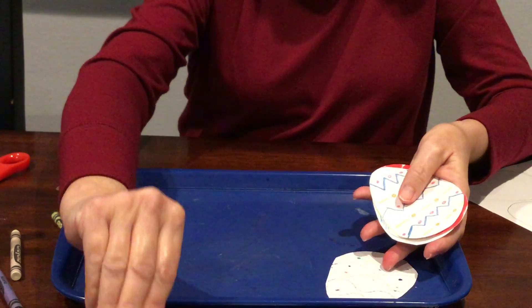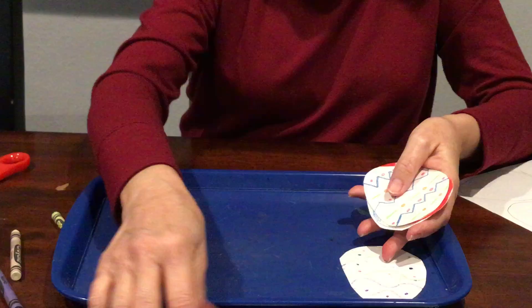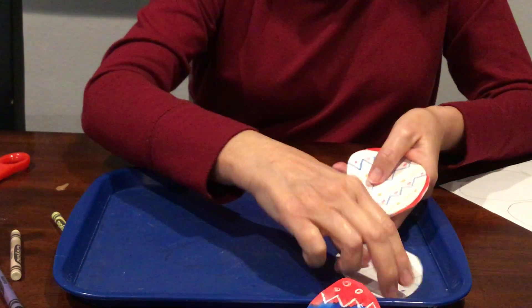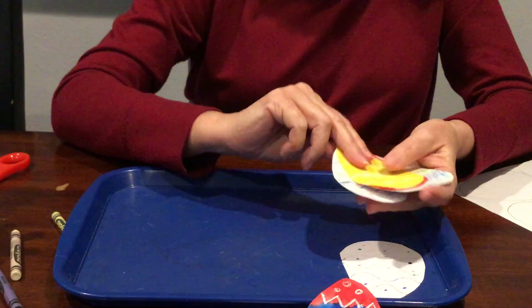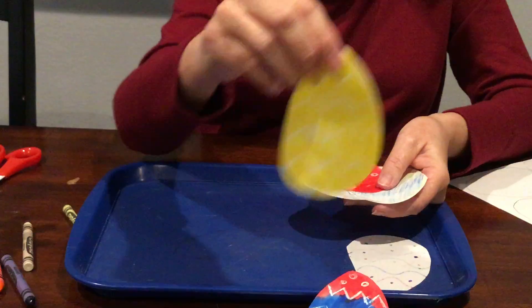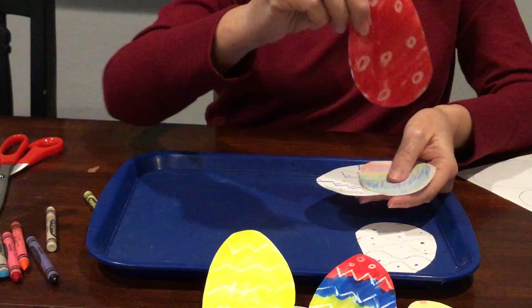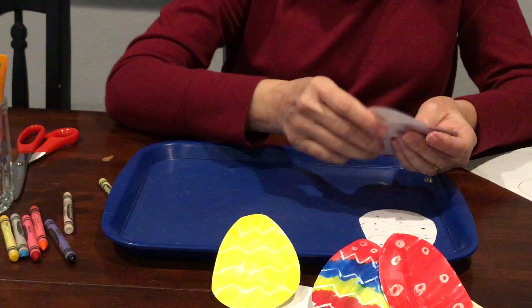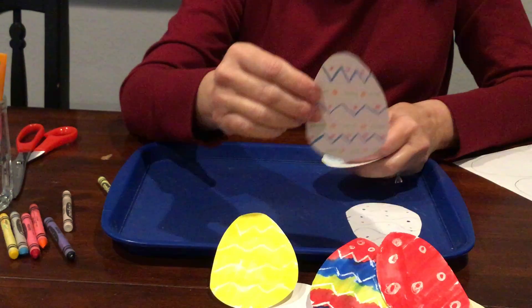Let's look through some of these eggs. Here's one I did that had zigzags and dots. Here's another one that I did that just had zigzags and I did it all yellow. And this one just had dots and I did it all red. You do yours however you want.